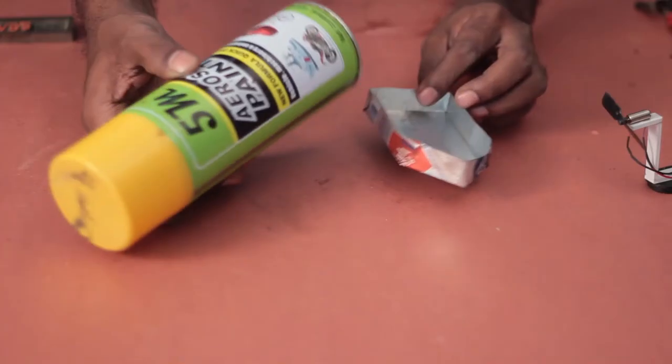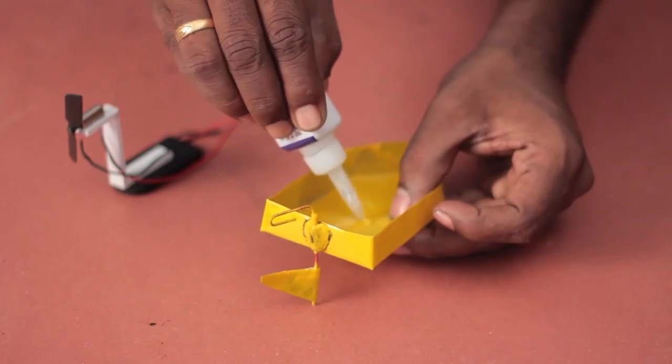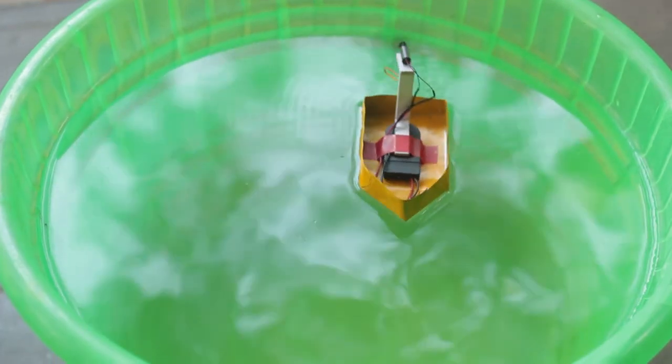Some epoxy to seal the joints and a coat of spray paint would make this project more interesting. With that done, the motor assembly is glued in the hull and the boat is ready for its maiden voyage. I also added a rudder to steer the boat.